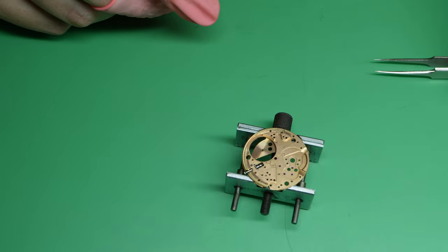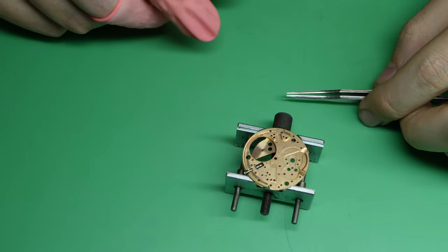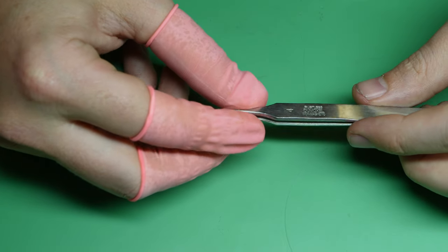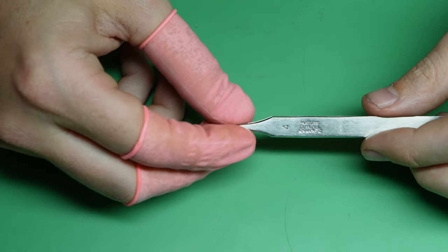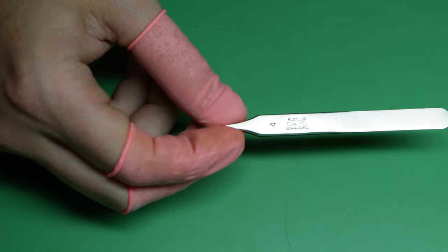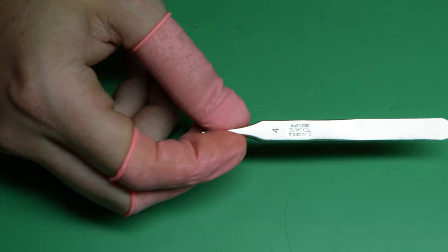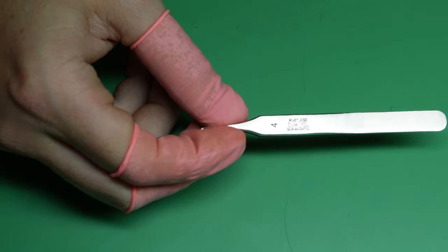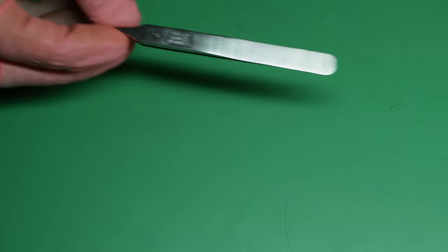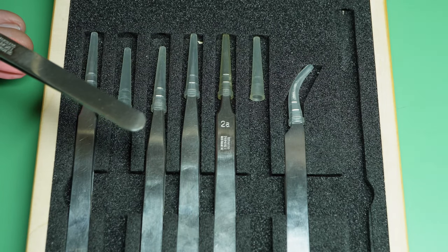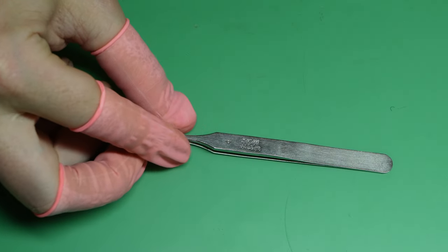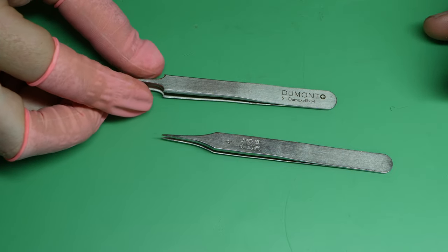Next thing that you always want to make sure is in good condition is your tweezers. Now getting a good set of tweezers is really important. I have a set of Demont tweezers and I have basically all the sizes, so I've got four, five brass, and then numerous other hair spring tweezers. I got it as a set the day when I was an apprentice, but the majority of the time I just use the brass, the fours, and the fives. And that's really about it.